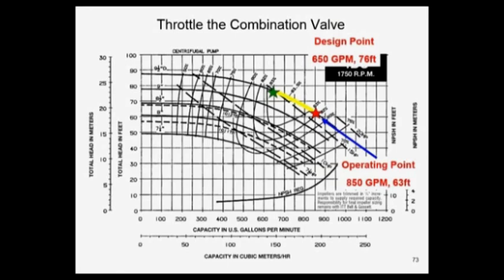My system curve was actually 63 feet, but I'm going to add some pressure drop through it by going through this throttling valve, I'm going to push it back up to 76 feet. Now I'm at 650 GPM, I'm now back at design. Great!